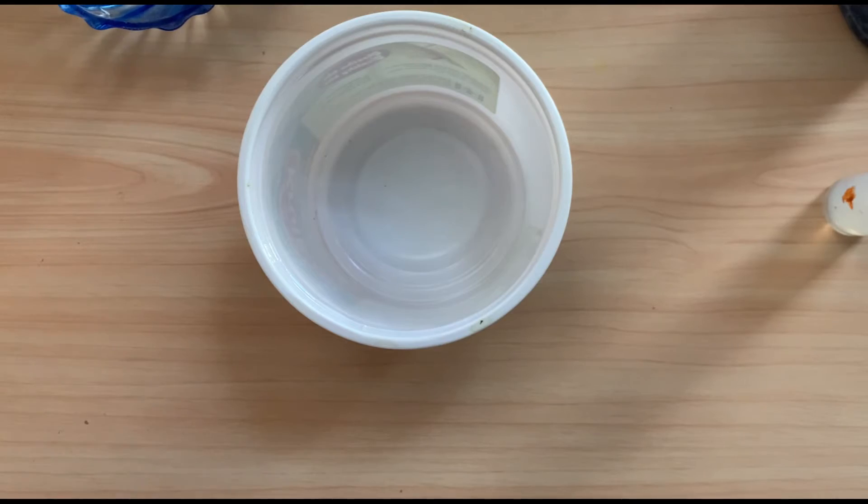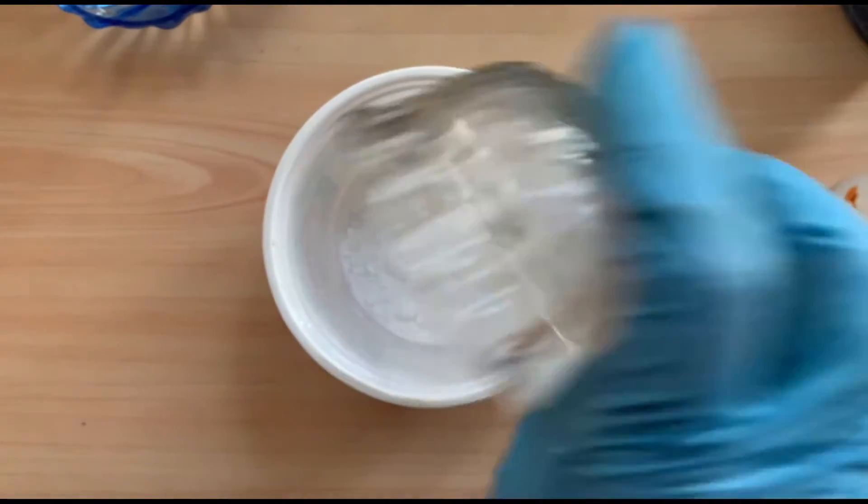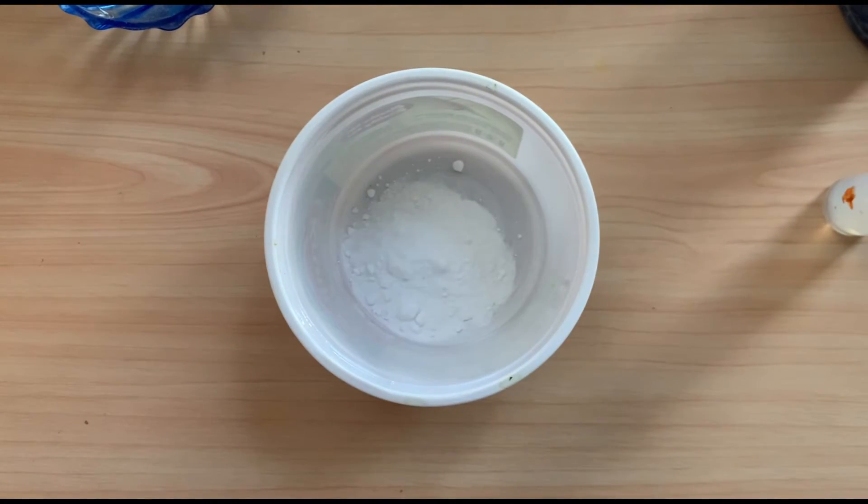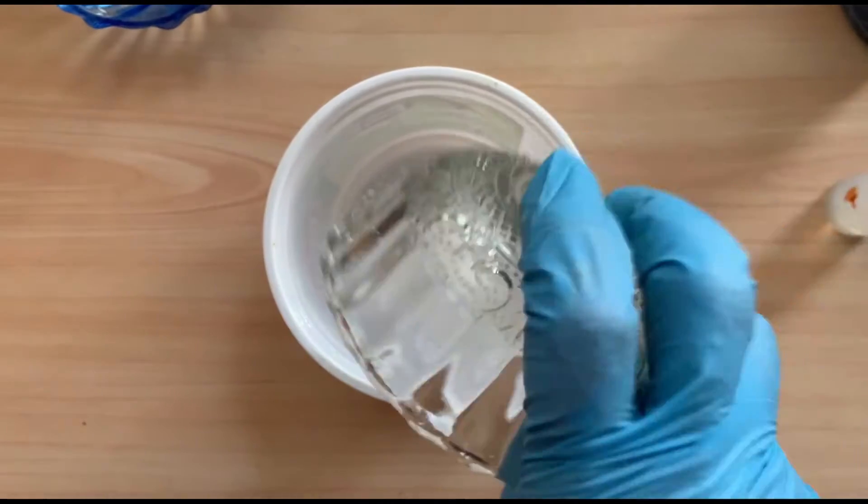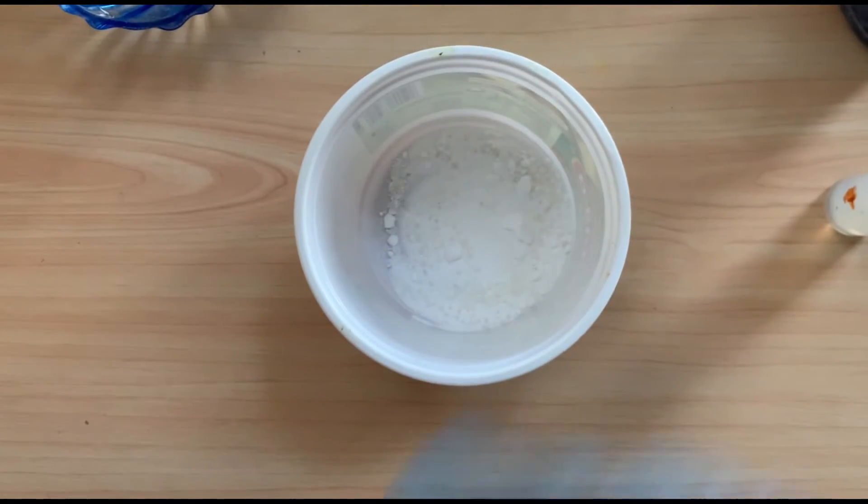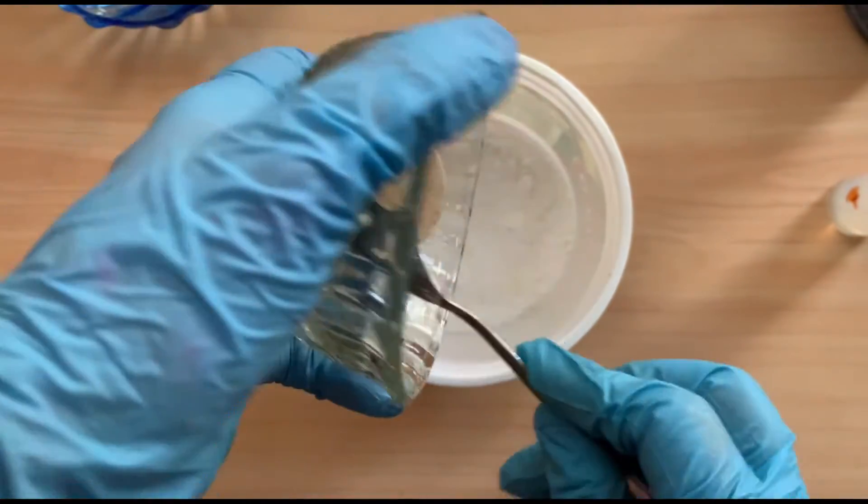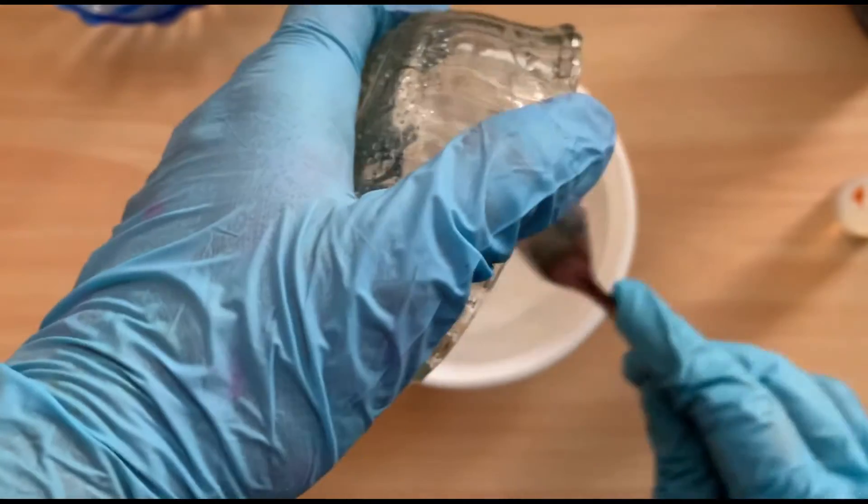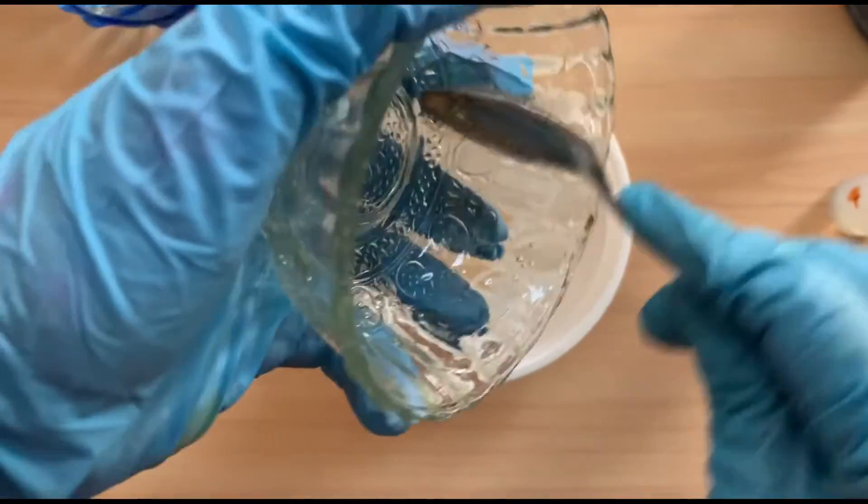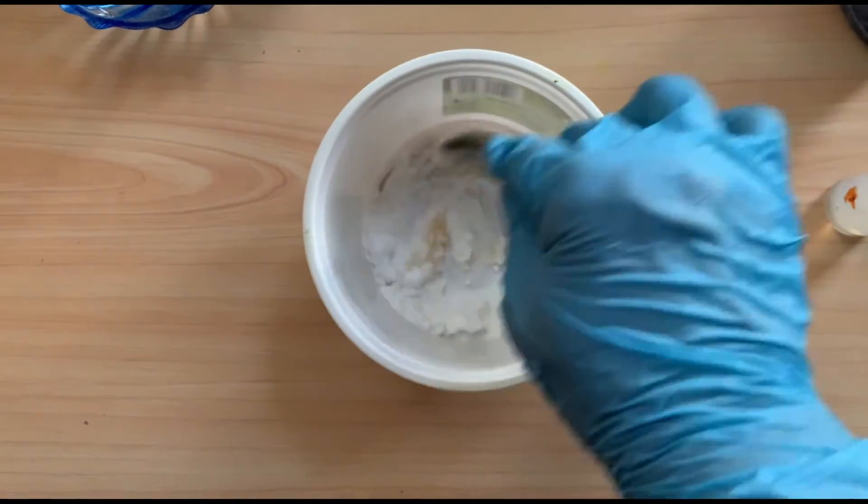Now friends, I am starting the practical video. First of all, I am taking baking soda in a big vessel, then I am adding citric acid in it. Now I am adding liquid soap.